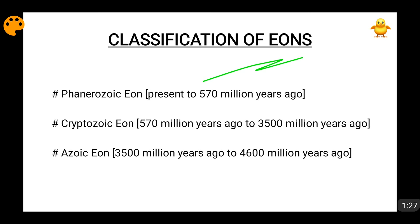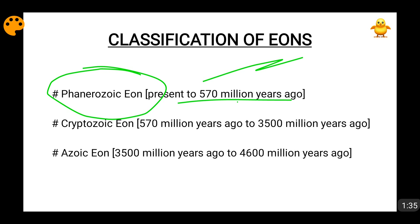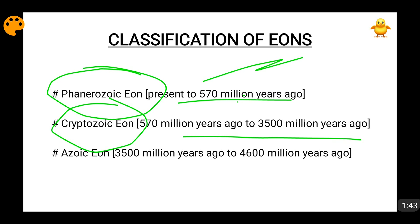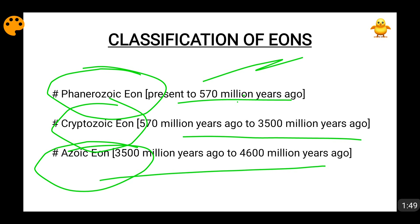The very first is the Phanerozoic Eon, from present day to 570 million years ago. Then comes the Cryptozoic Eon, which goes from 570 million years ago to 3,500 million years ago. And then the Eozoic Eon, which goes from 3,500 million years ago to 4,600 million years ago. These are the three Eons.